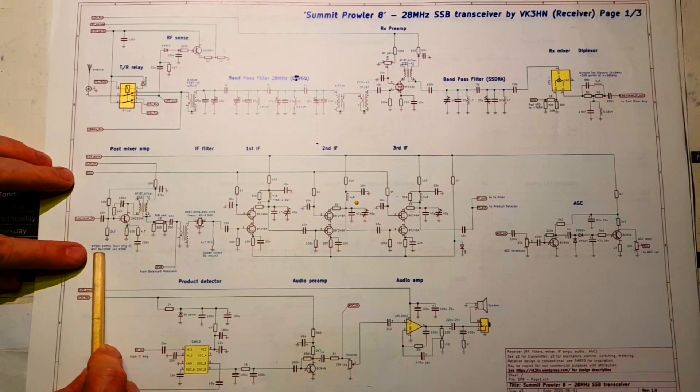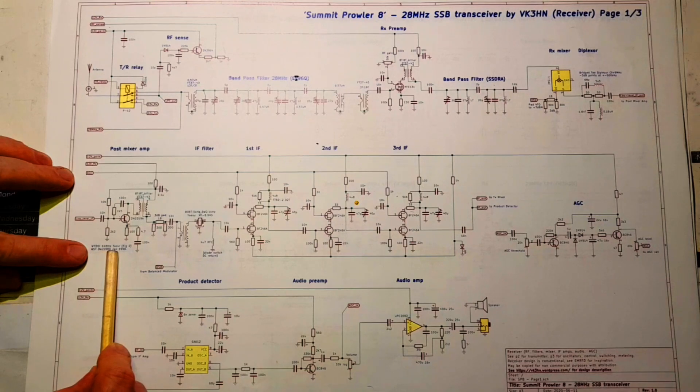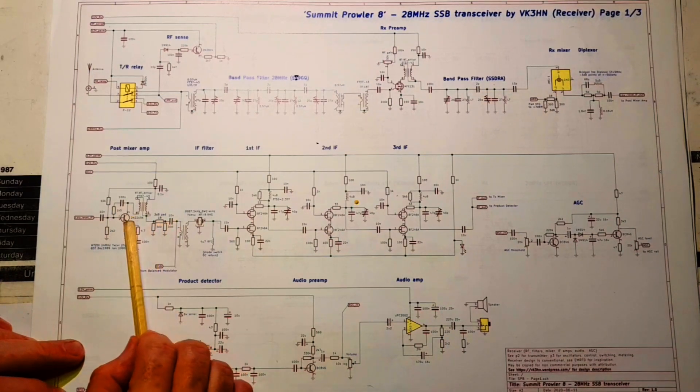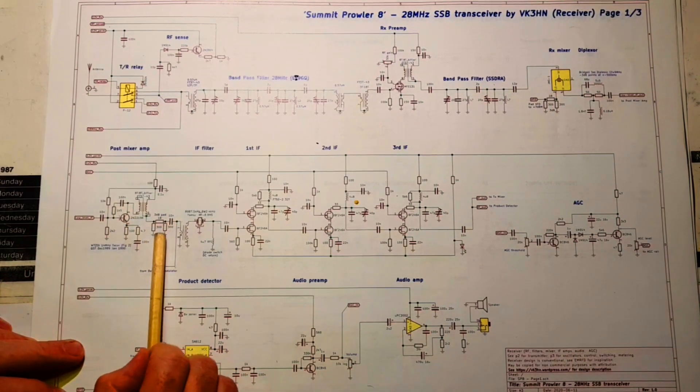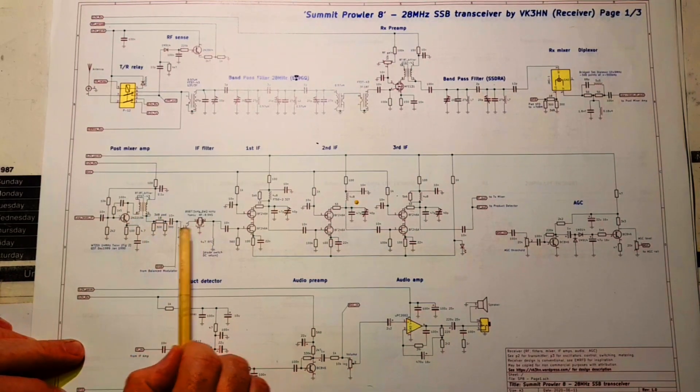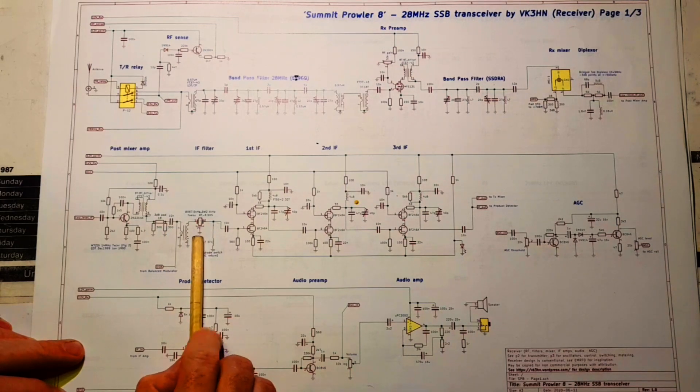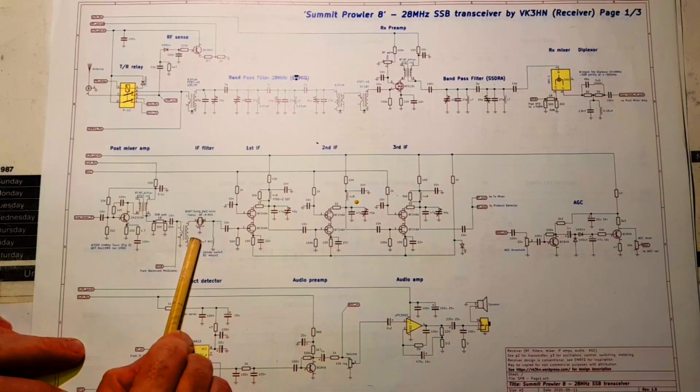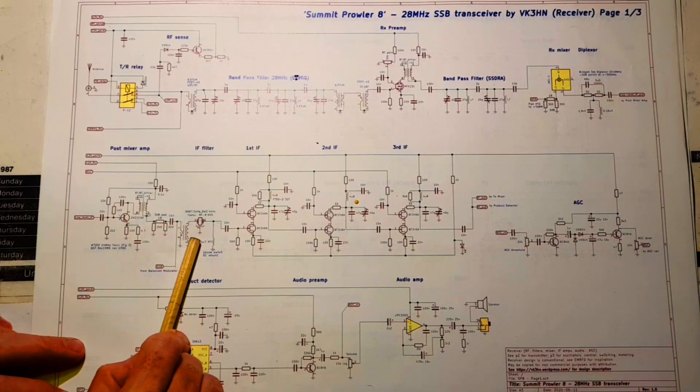That comes through a post mixer amp. It's a 2N2219 in this case. This is another one from Wes W7ZOI. This was the one from his 14 MHz transceiver from 1989. So that picks up some of the gain lost in the mixer. A pad there and then transformer coupled into my surplus Yaesu XF 8.9 HS.